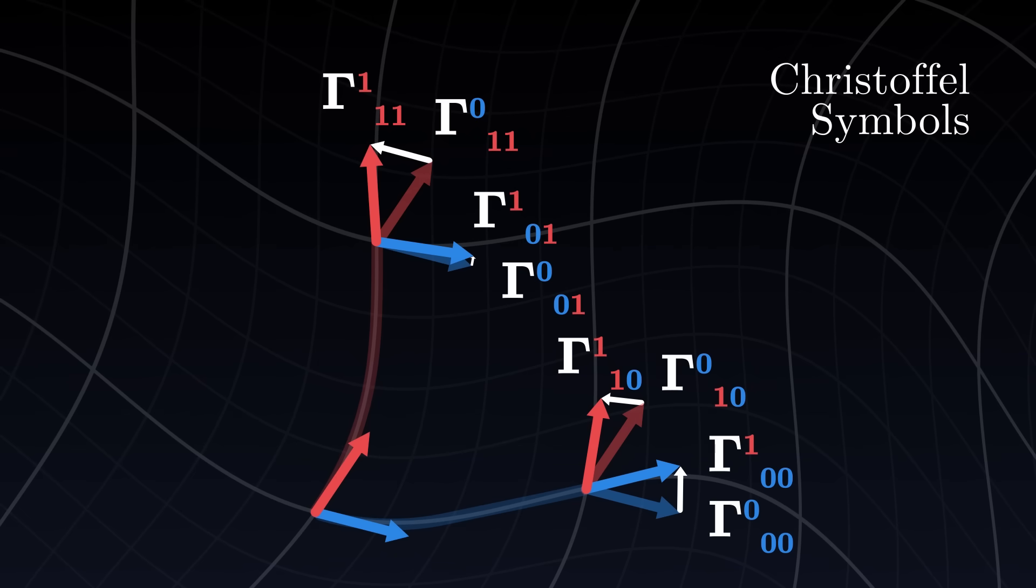The Christoffel symbols are essential quantities for general relativity, because they encode how the grid changes along each direction. They contain crucial information on how our coordinates behave.